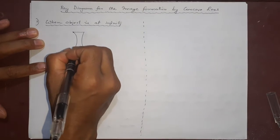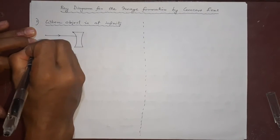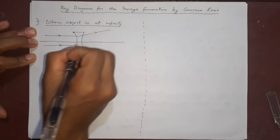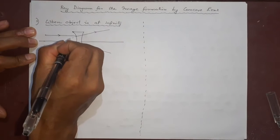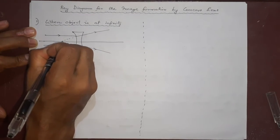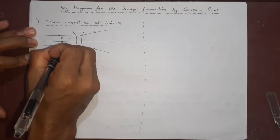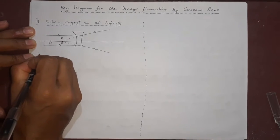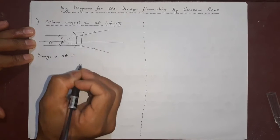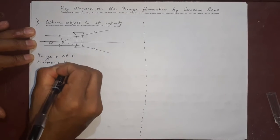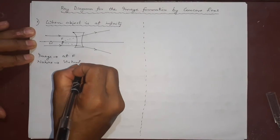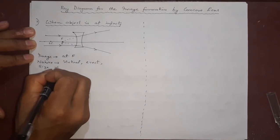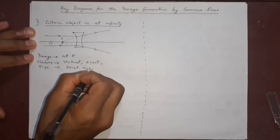Case 1: when the object is at infinity. The ray comes directly parallel to the principal axis, diverges away, but appears as if it is coming from the focus. So the image is formed at F. The image is virtual, erect, and point-sized.